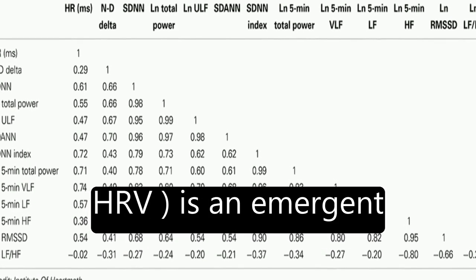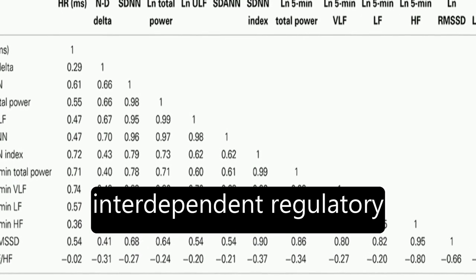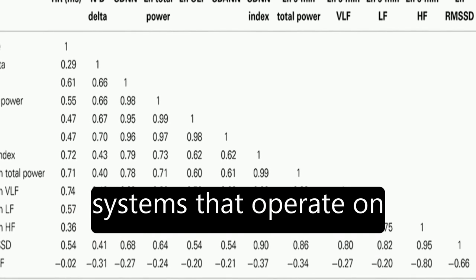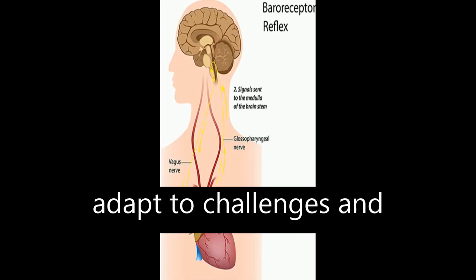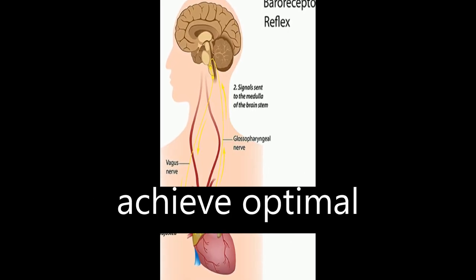Heart rate variability, HRV, is an emergent property of interdependent regulatory systems that operate on different time scales to adapt to challenges and achieve optimal performance.